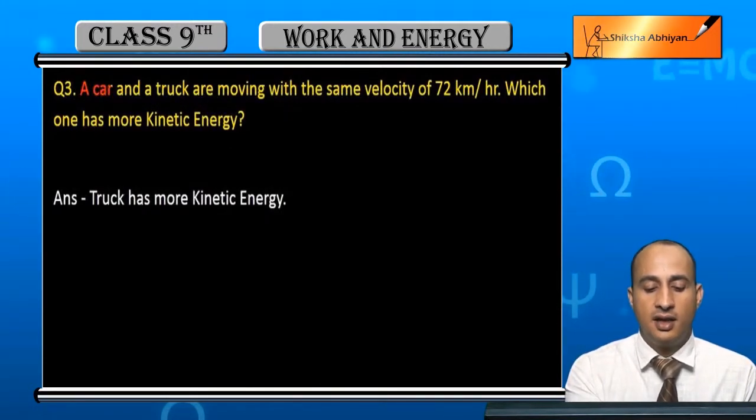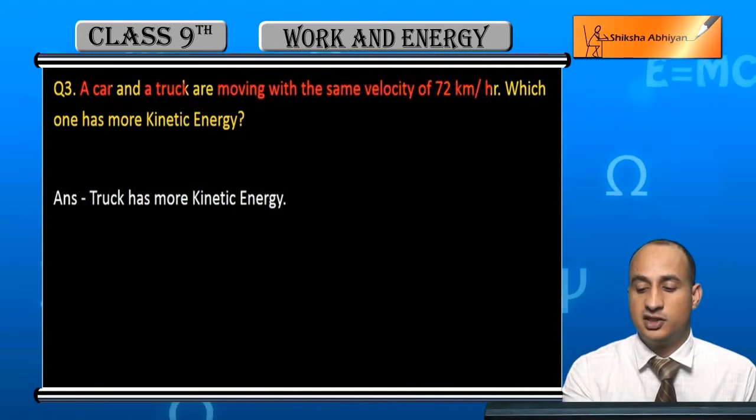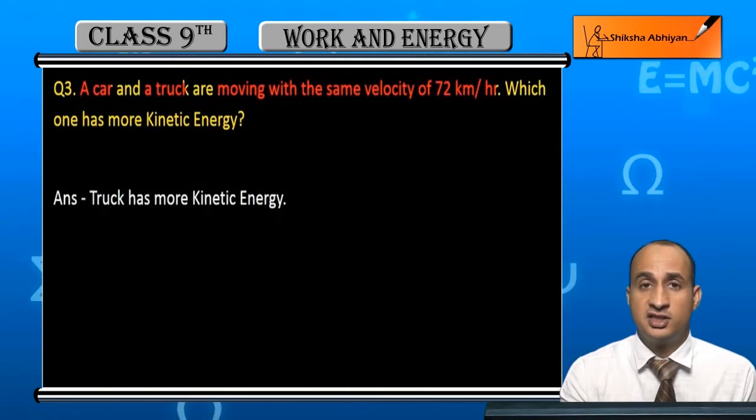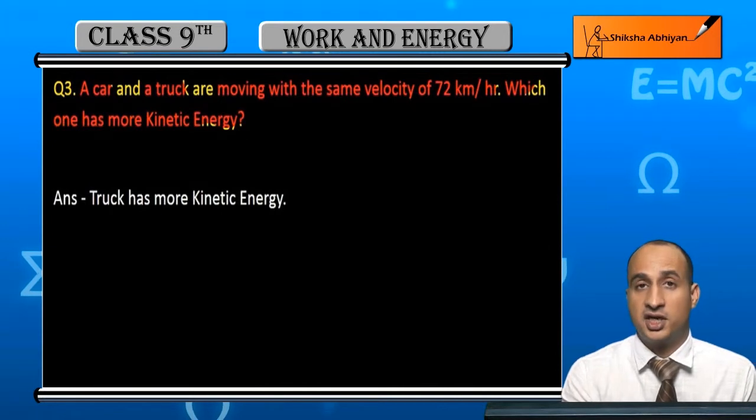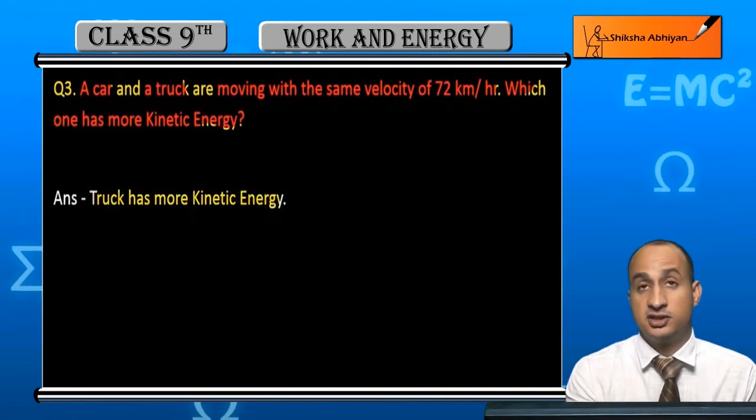A car and a truck are moving with the same velocity of 72 km per hour. Which has more kinetic energy? The answer is simple - truck ki kinetic energy zyada hogi.